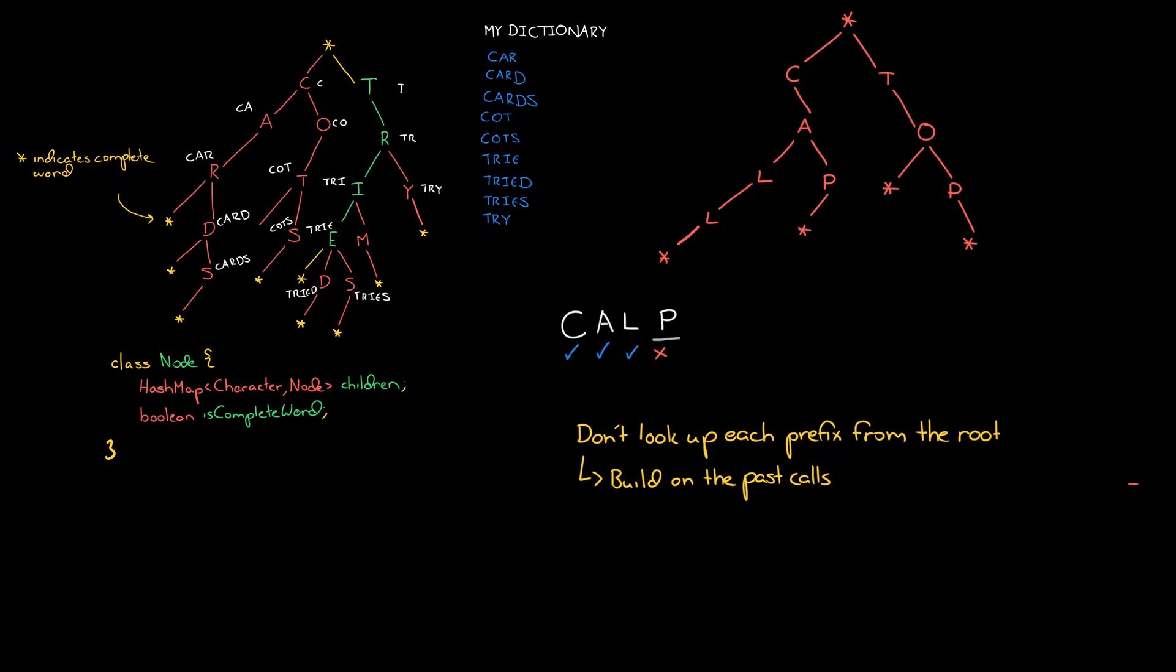There's different ways you can implement that. One way is to keep state within the trie. Another way is to actually return the node back to the caller. So when I say is C a valid prefix, I get not only that it's a valid prefix, but I also get a reference to that node. Then rather than starting from the root and saying is CA a valid prefix, I just ask is A a child of C? And then I ask is L a child of CA? Et cetera.